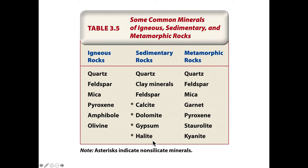In metamorphic rocks, some key minerals would be garnet, staurolite, and kyanite. The reason these are key minerals is they're very easy to identify by sight, and they're only found in metamorphic rocks. So if you find one of these — garnet, staurolite, or kyanite — it's metamorphic.